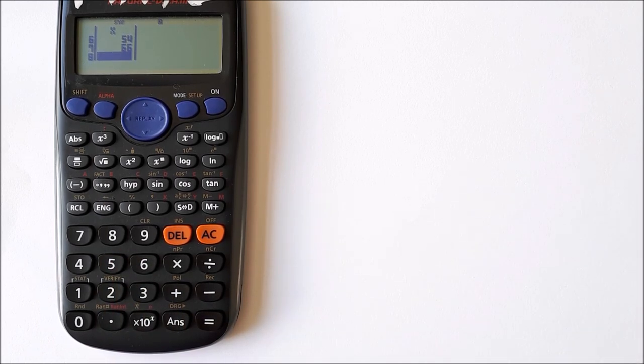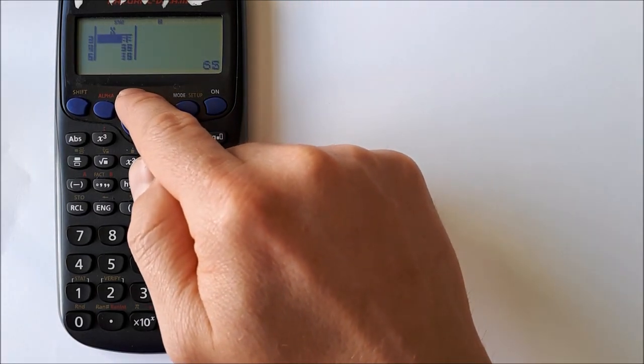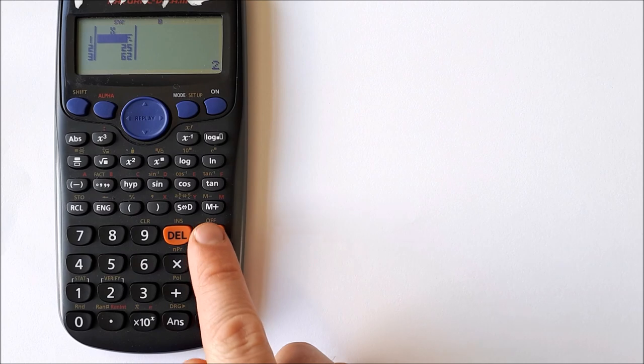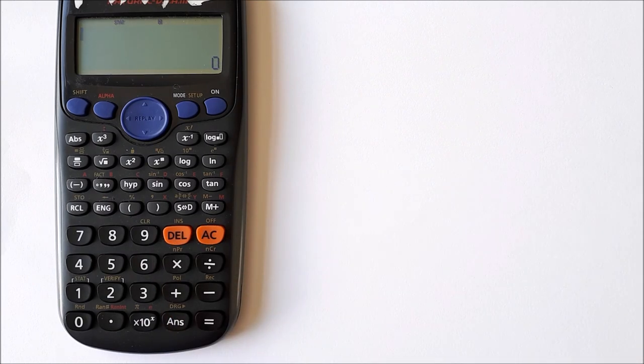So you can see that they're all typed in there and they're in the calculator. You press AC and that clears it. Now to find the mean, we go shift and stats, that's one.